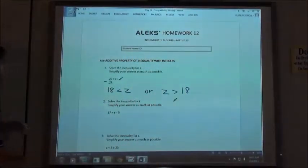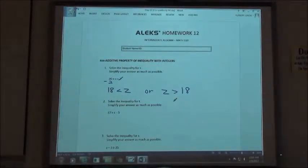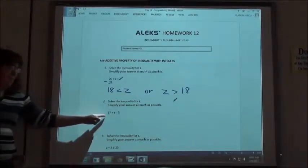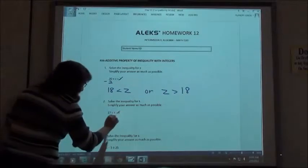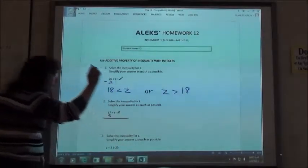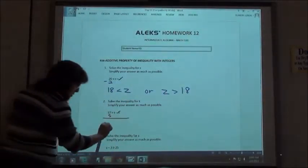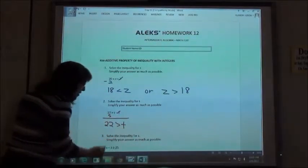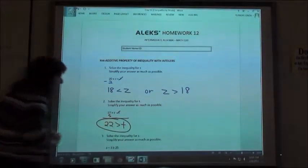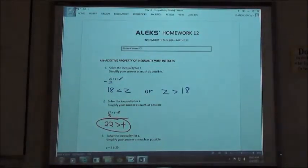On number 2, if I'm solving for t, what would I do? Add the 5. 17 plus 5 would give me 22 is greater than t. And you have to enter that whole inequality in there—it's not just 22, it's 22 is greater than t.